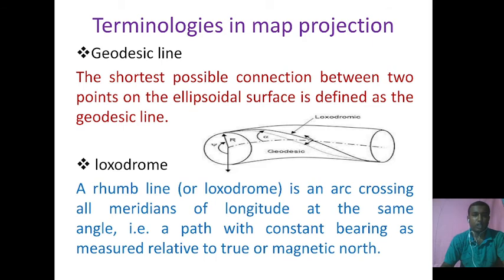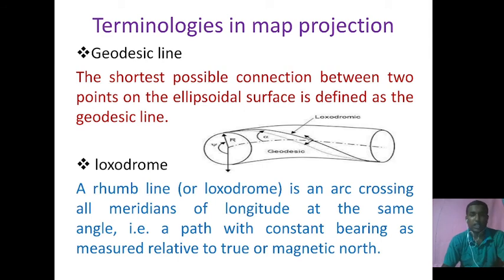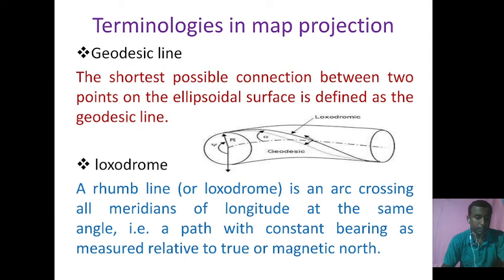Now I am switching over to another terminology of map projection — geodesic line. Geodesic line is similar to the great circle arc. The shortest possible connection between two points on the ellipsoidal surface is defined as the geodesic line, or for convenience, the geodesic. Progressing along this curved line from point to point, the tangent continuously changes its azimuth. According to Clairaut's theorem, the product of the radius r of the parallel circle phi and the sine of the azimuth alpha of the geodesic is a constant.